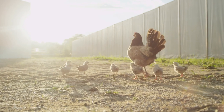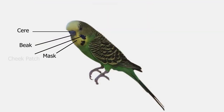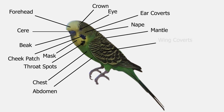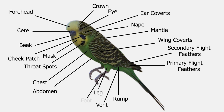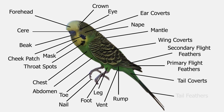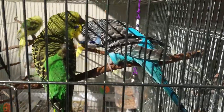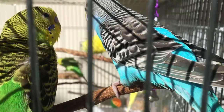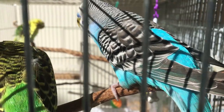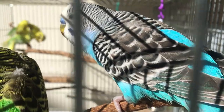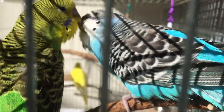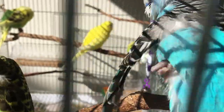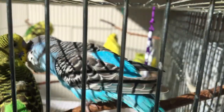Before we discuss feathers any further, I highly recommend you watch the first lesson about budgie topography to understand the parts we are talking about. So how important is your bird's feathers to him? Feathers enable budgies to regulate their temperature by providing insulation, they provide a degree of waterproofing, serve as physical protection, and are used in courtship and communication. They provide camouflage and, of course, allow the bird to fly.